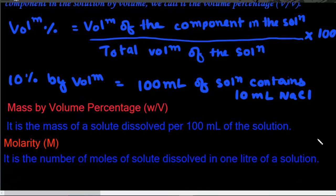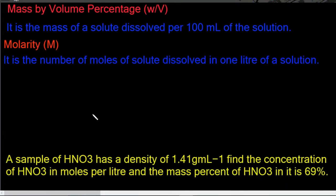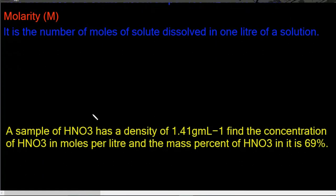The third way of expressing the concentration of a solution is mass by volume percentage. It is the mass of the solute dissolved per 100 millilitres of the solution. It is denoted by W by V.